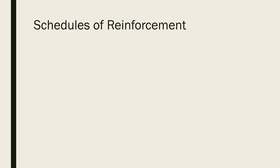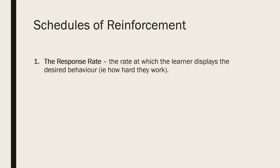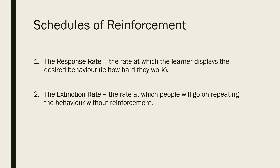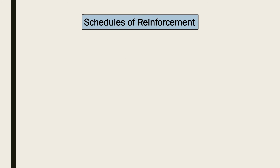Reinforcement is not necessarily a straightforward process — a number of factors influence how quickly and how well new things are learned. When and how often behaviours are reinforced plays a role in the speed and strength of acquisition. In particular, the schedule of reinforcement affects the response rate — the rate at which the learner displays the desired behaviour — and the extinction rate — the rate at which people continue repeating the behaviour without reinforcement. There are several schedules of reinforcement that impact the operant conditioning process.